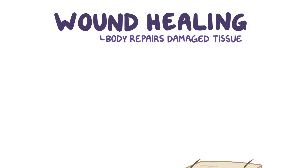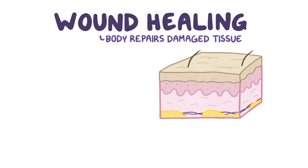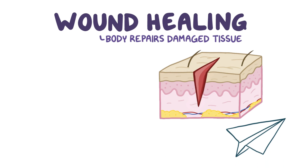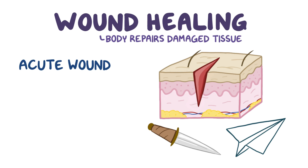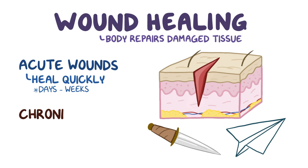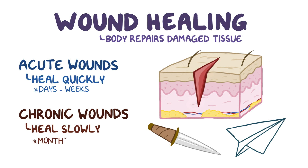Wound healing is the process where the body repairs damaged tissue after any traumatic injuries, anything from a paper cut to a stab wound. Acute wounds heal up quickly over days to weeks, whereas chronic wounds like bed sores, foot ulcers, or infections can persist for months.